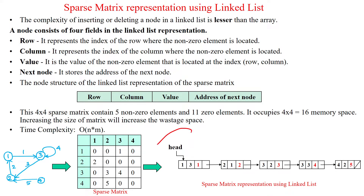We can represent the sparse matrix using the linked list data structure. For five nodes, it takes a total of 20 memory locations, because each node has four fields: row number, column number, value, and address of the next node. This is the sparse matrix representation using linked list. Thanks for watching.